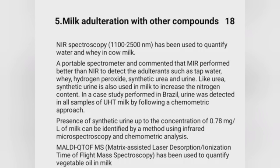Milk adulteration with other compounds — NIR spectroscopy has been used to quantify water and urea in cow milk. A portable spectrometer study concluded that MIR performed better than NIR to detect added adulterants such as tap water, whey, hydrogen peroxide, synthetic urea, and urine. Synthetic urine is also used in milk to increase nitrogen content. In a case study in Brazil, urine was detected in all UHT milk samples using a chemometric approach. Presence of synthetic urine up to 0.78 mg/L can be identified using infrared microspectroscopy and chemometric analysis. MALDI-QTOF (matrix-assisted laser desorption/ionization time-of-flight mass spectrometry) has been used to quantify vegetable oil in milk.